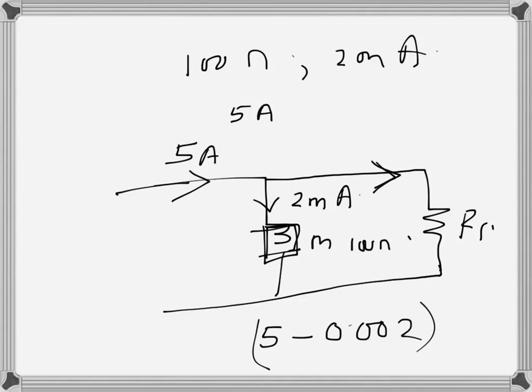So basically, the resistance that we will need is R. This is the current that goes through the meter and this is the voltage drop. Let me just redo this part. So basically, the voltage drop that is across this one will be this one, and this one has the same voltage drop.